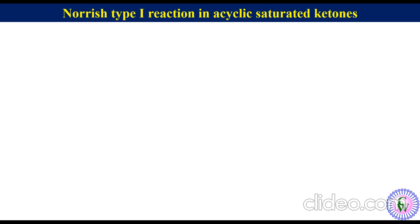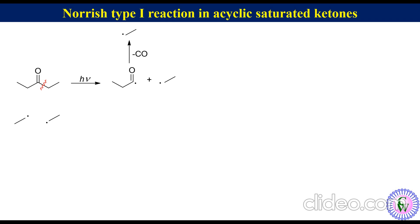For example, diethyl ketone after irradiation undergoes Norrish Type 1 cleavage to produce an acyl radical and an ethyl radical. The acyl radical immediately loses carbon monoxide to produce a second ethyl radical. The two ethyl radicals combine together to produce butane, and they undergo disproportionation to produce ethane and ethene.